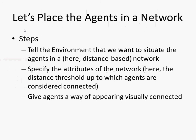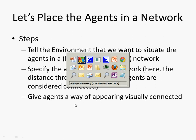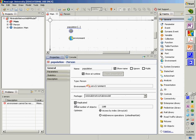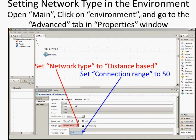You can imagine this reflecting transmission of a pathogen — a local phenomenon where two people have to be within a certain distance to communicate that pathogen. We'll first set up the environment for that, then specify the attributes of the network — in this case a single attribute: the connection range. Finally, we'll give agents a way of appearing visually connected, having connections to each other that are visible as a network structure. This is not merely eye candy — it has computational import when we simulate spread of ideas or pathogens across the network.